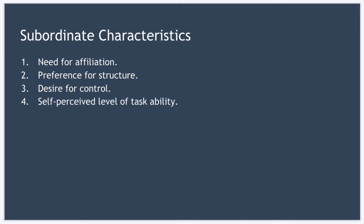So finally we come on to the self-perceived level of task ability. And this refers to how good a subordinate believes they are at performing a task. Now the less good they believe they are at performing a certain task, the more they're going to prefer a directive style of leadership.